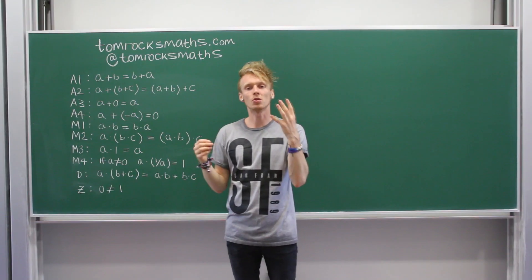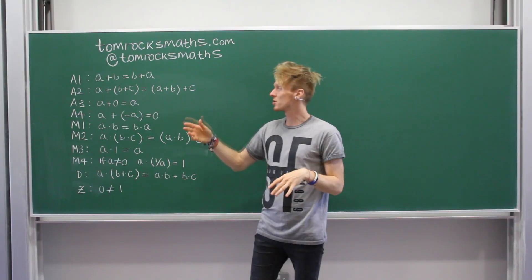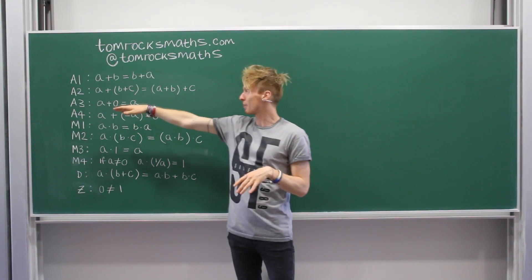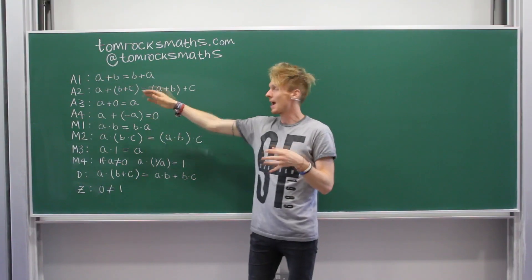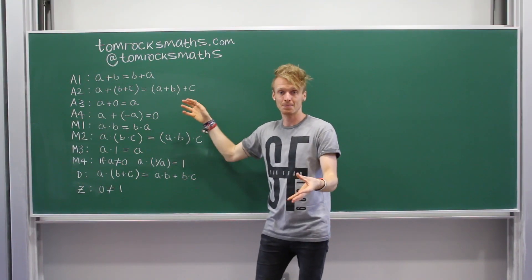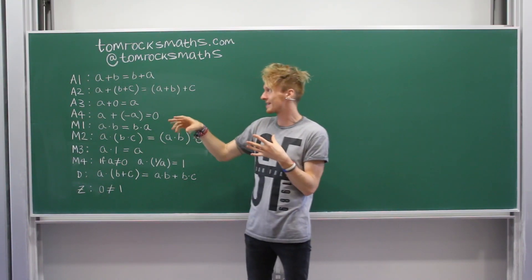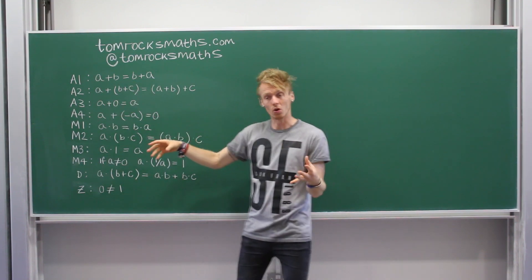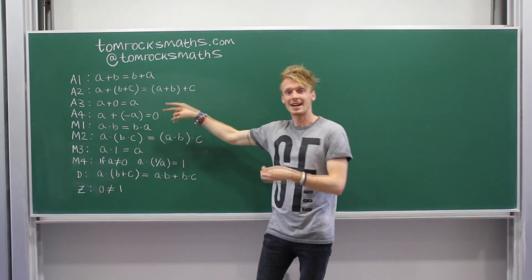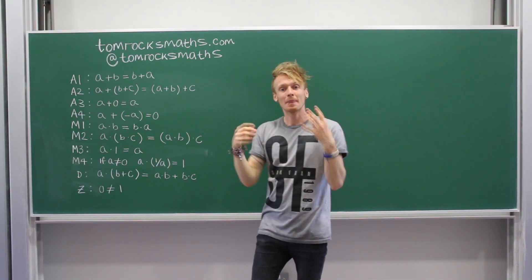A2 is called the distributive law. And this tells you that if you have a plus something in brackets, b plus c, it's the same as a plus b first and then c. So it's saying you can add the second and third numbers together and then add them to the first. Or you can add the first two numbers and then add the third. You'll get the same answer.